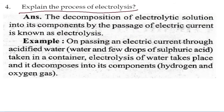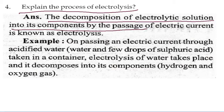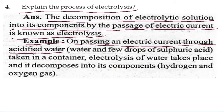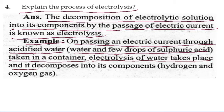Explain the process of electrolysis. The decomposition of an electrolyte solution into its components by the passage of electric current is known as electrolysis. For example, on passing electric current through acidified water (water with a few drops of sulfuric acid taken in a container), electrolysis of water takes place and it decomposes into hydrogen and oxygen gas.